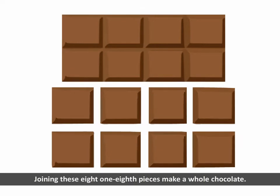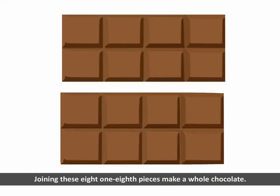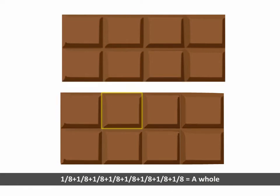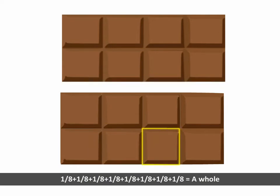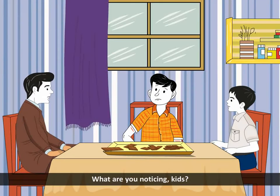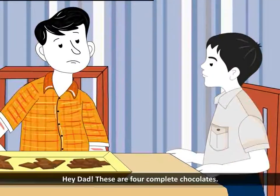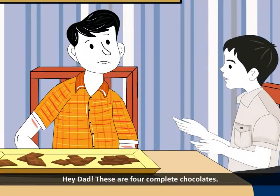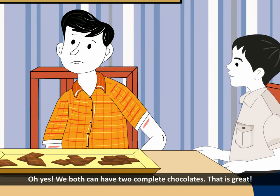Joining these eight one-eighth pieces makes a whole chocolate. 1 upon 8 plus 1 upon 8 plus 1 upon 8 plus 1 upon 8 plus 1 upon 8 is equal to a whole. What are you noticing, kids? Hey dad, these are four complete chocolates. Oh yes, we both can have two complete chocolates. That is great.